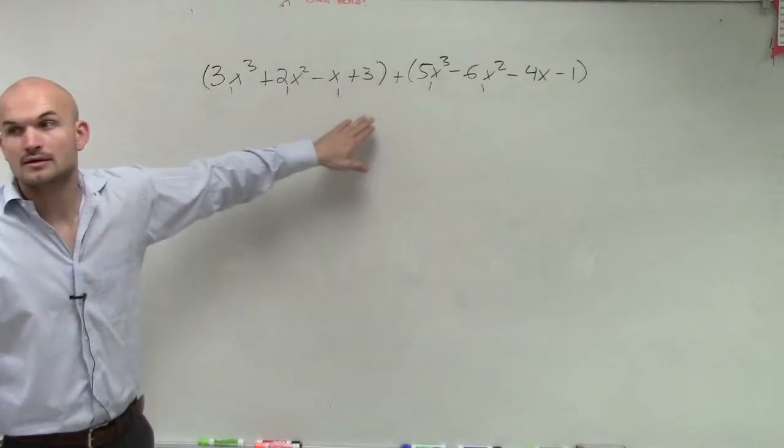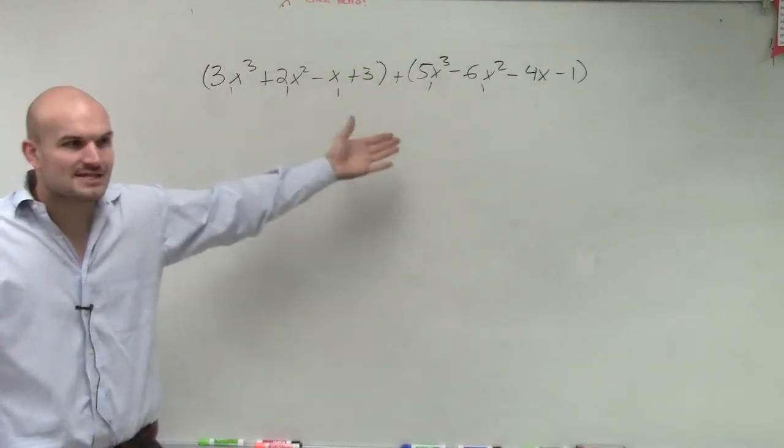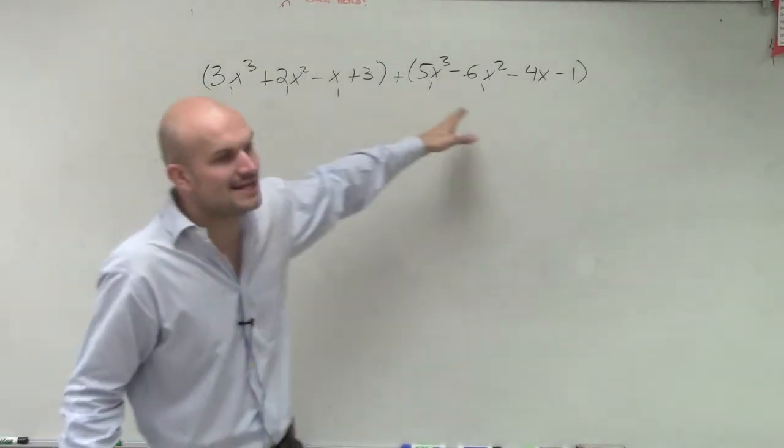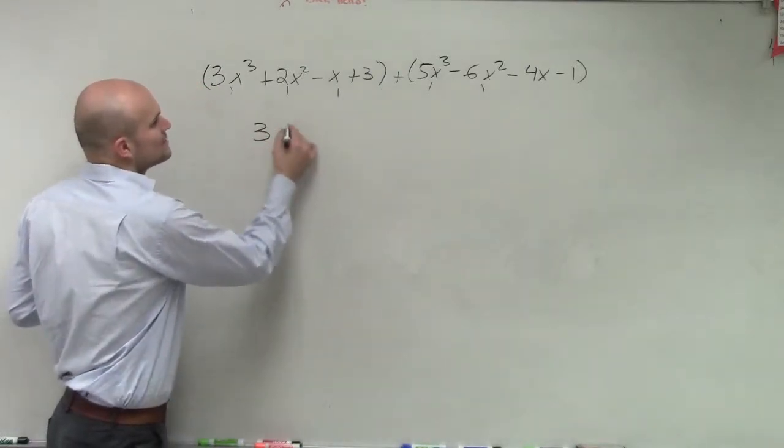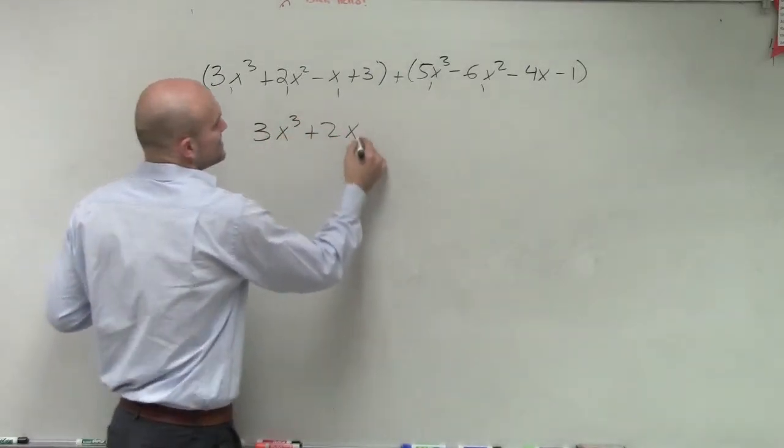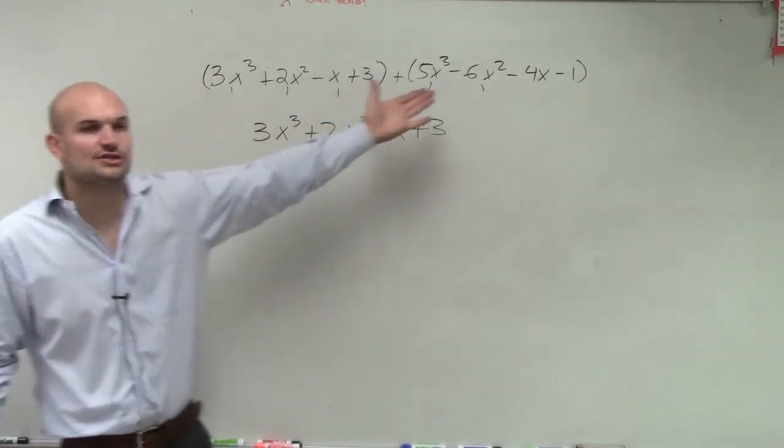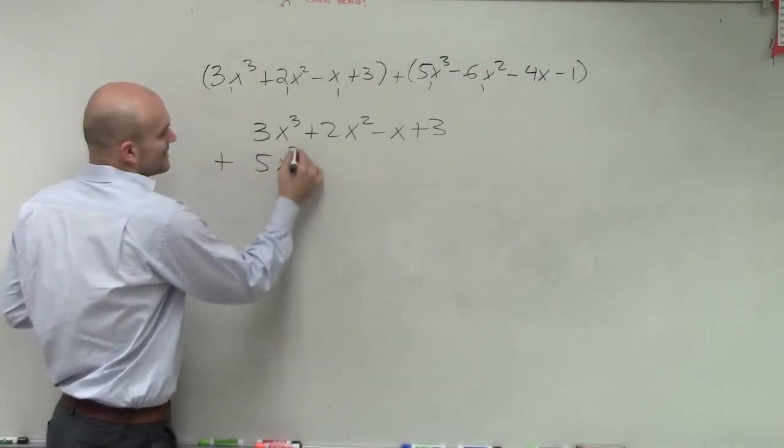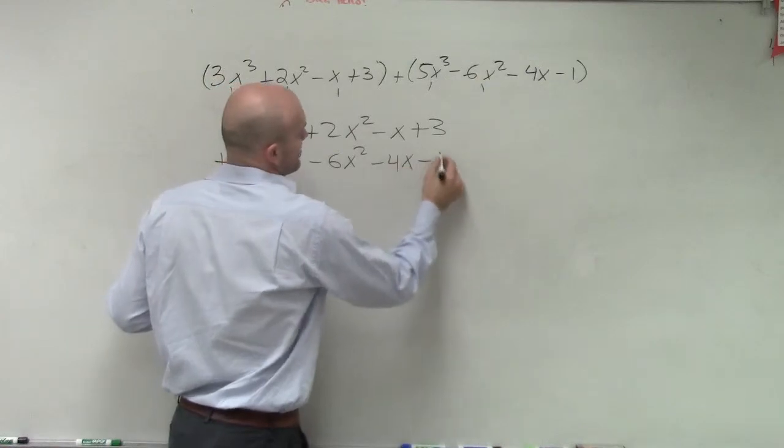So here, what you're going to do is this exact same thing. Let's just make this vertical addition. Why do it horizontally? We can do it vertically. But the one important thing is we can only make sure that we add terms that are the same. So when we add them up, we got to make sure that we're putting like terms under each other. So I'm just going to say plus 5x cubed minus 6x squared minus 4x minus 1.